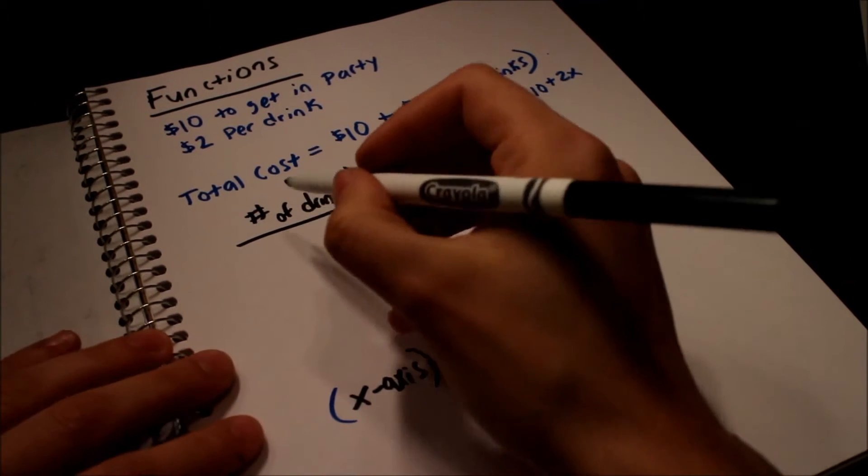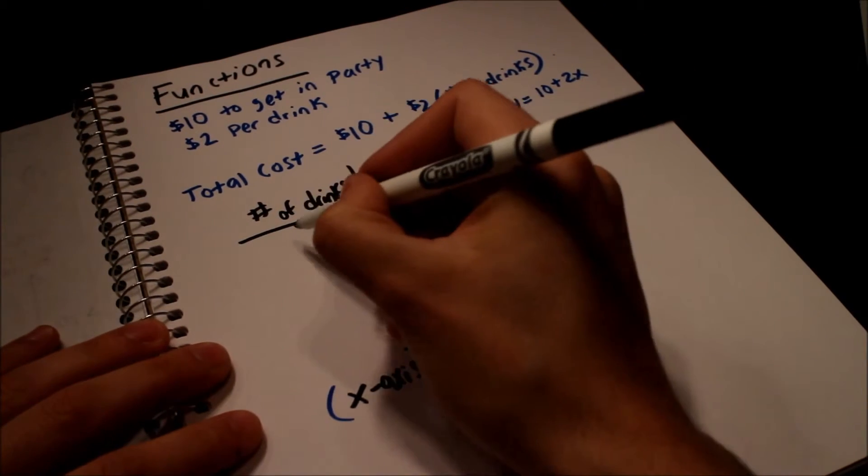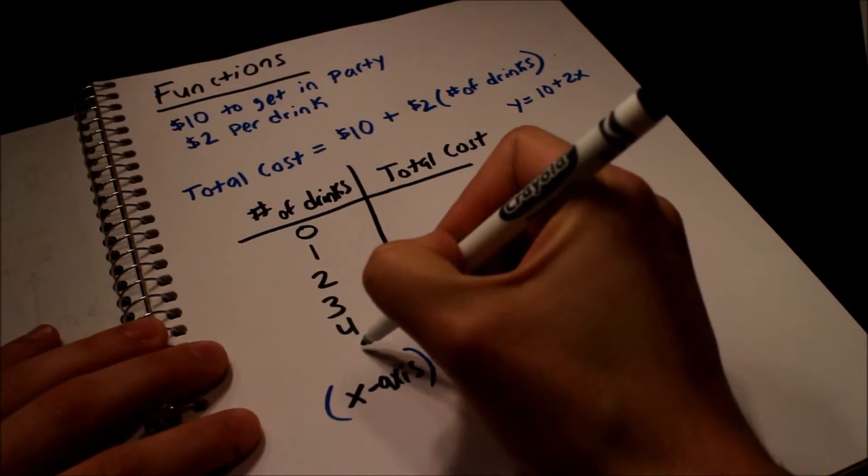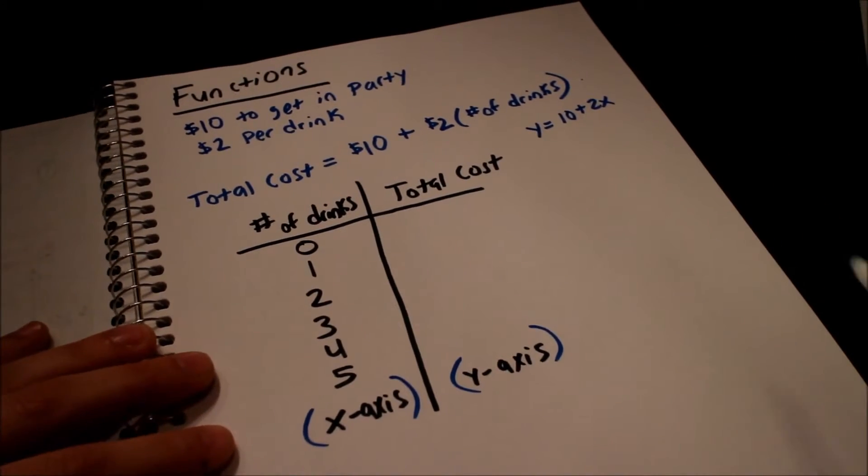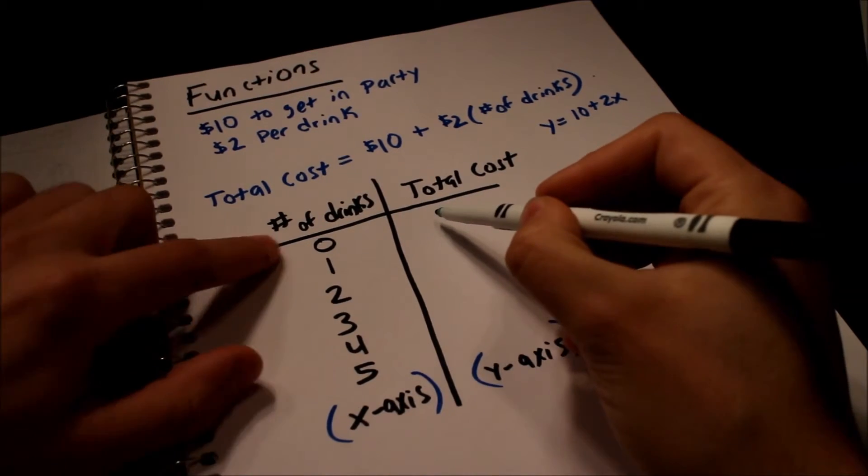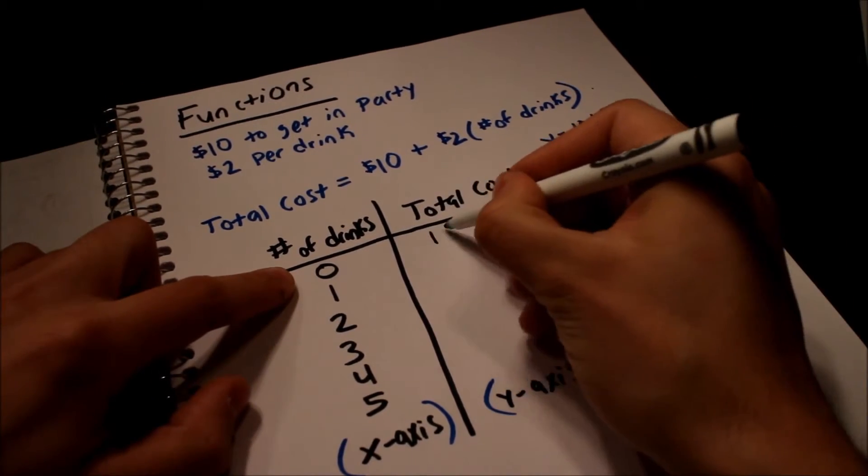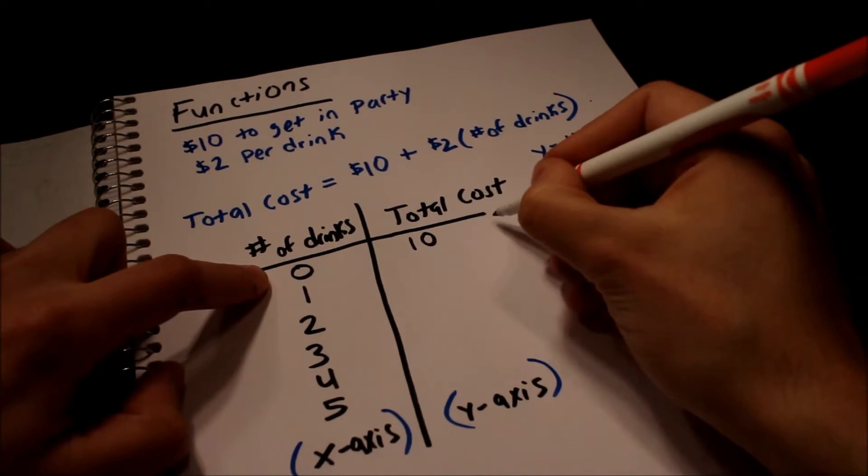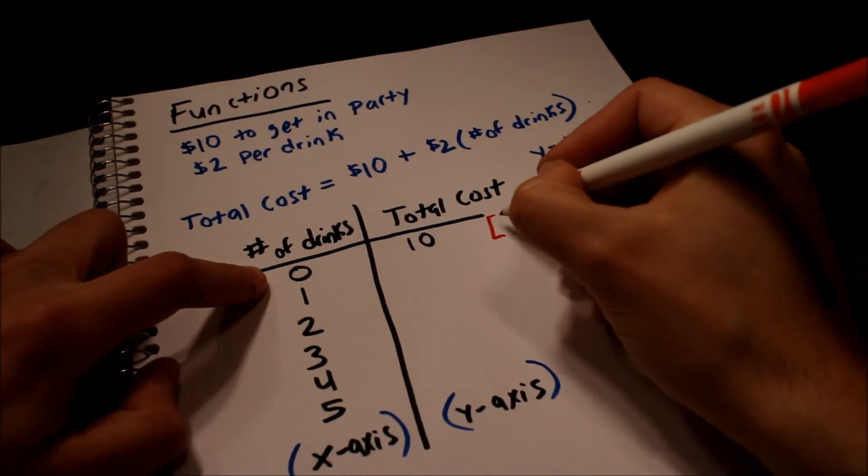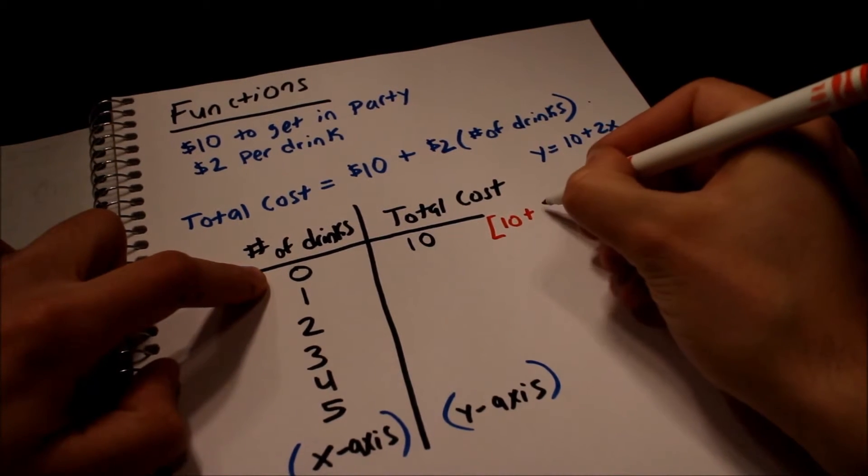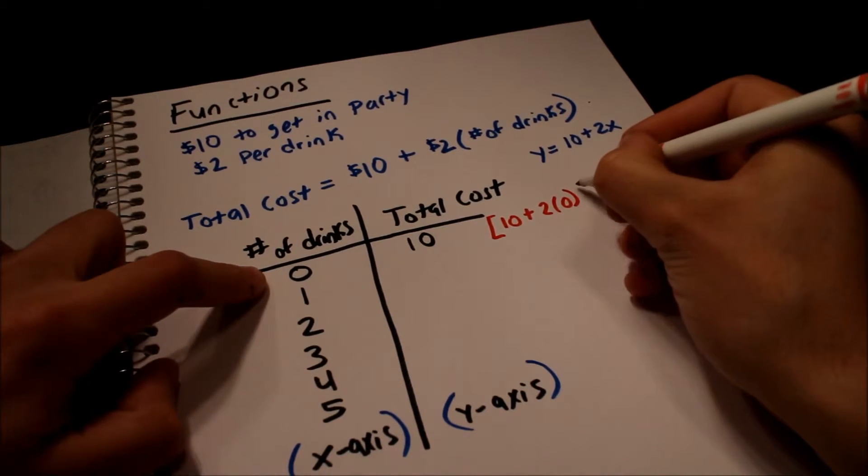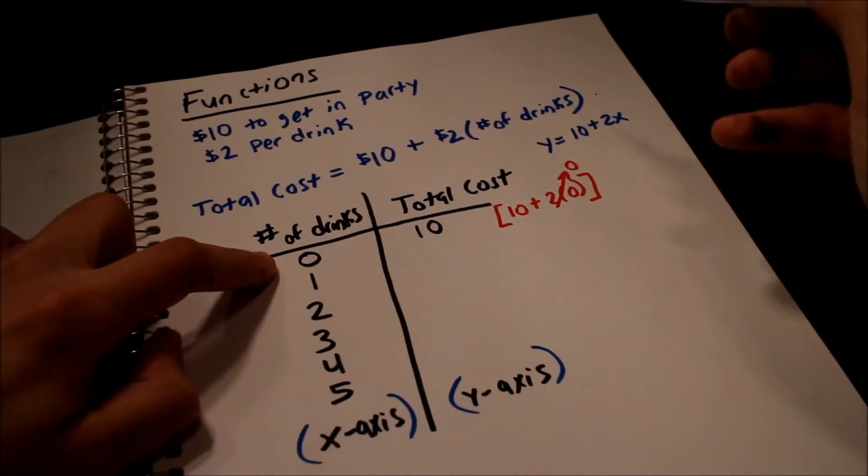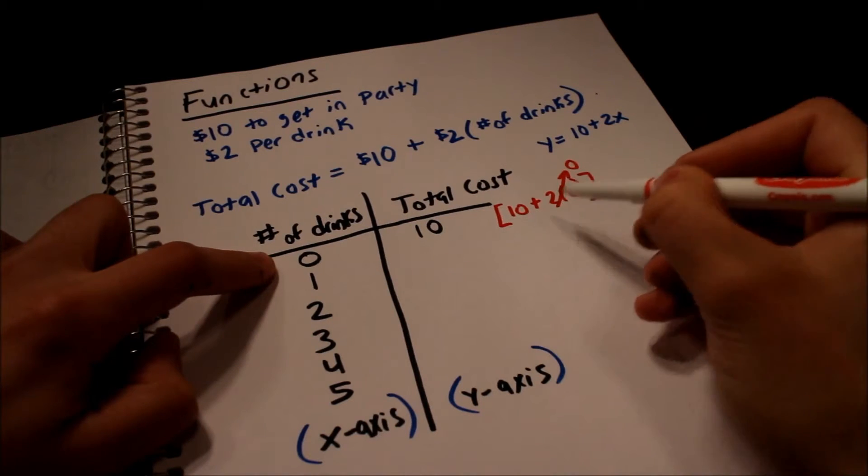So we're going to put in different drink numbers for the x value so that we can spit out or get the result or the output of total cost. Just wanted to make sure that we understood that before moving forward. So let's see. Okay, number of drinks, let's make up some stuff. So let's say zero, one, two, three, four, five. So what's the total cost? If we have zero drinks here, this is obviously going to be ten dollars. Why is that? That's because we know that the total cost is equal to ten plus two times zero. Right? Two times zero. This is a zero. So the result is ten.